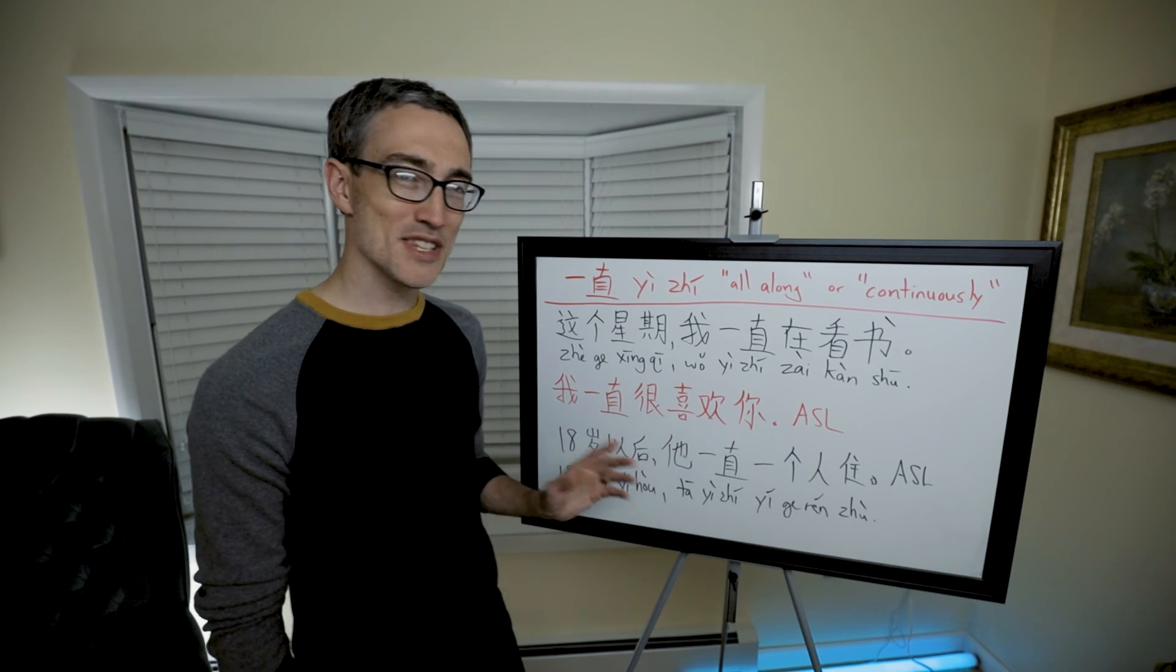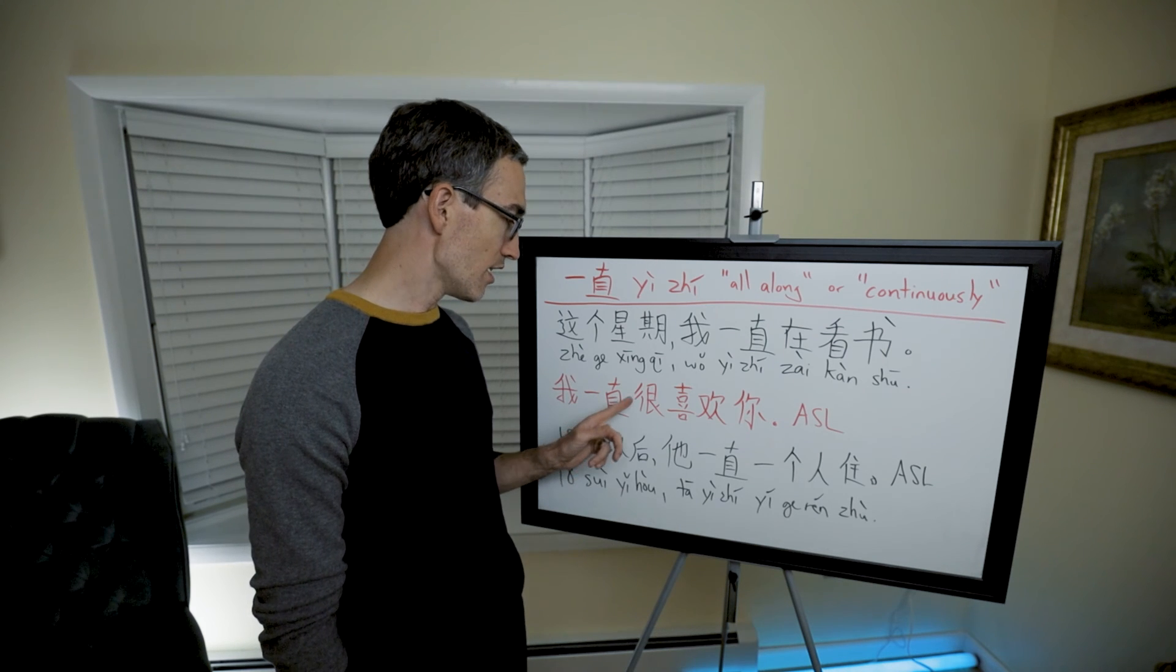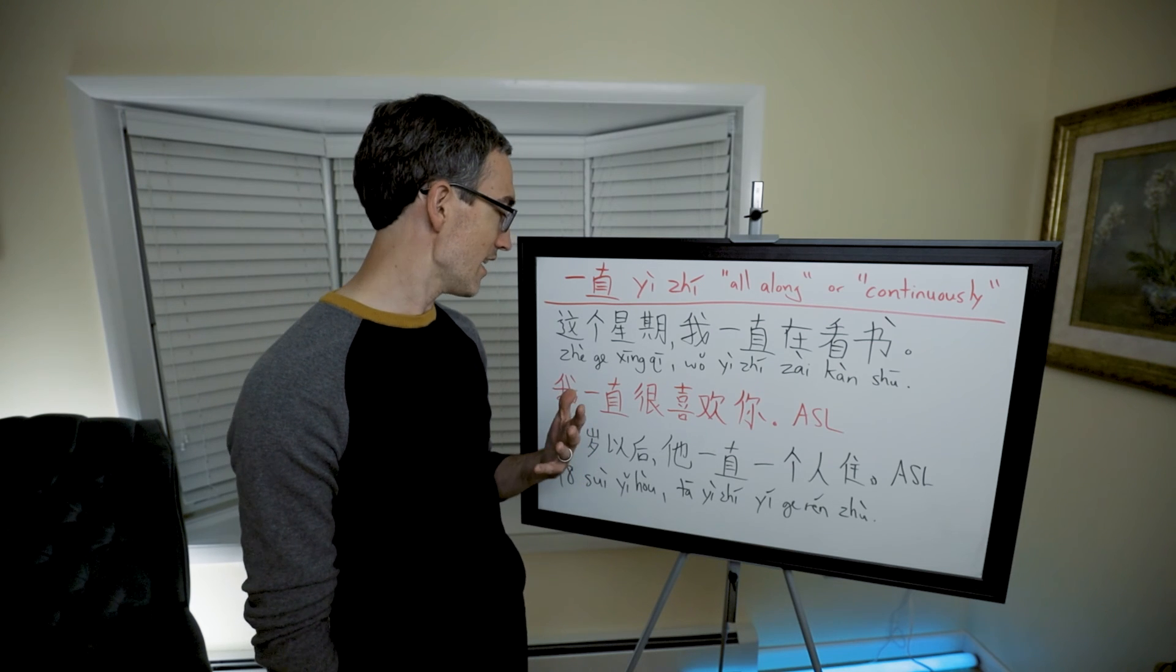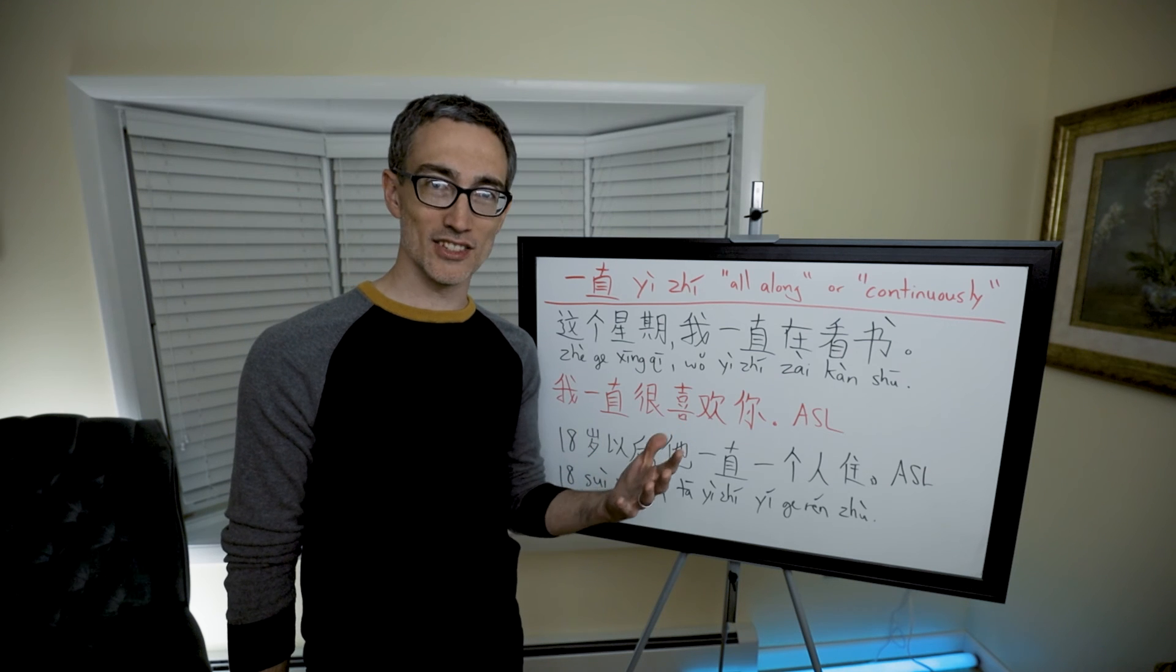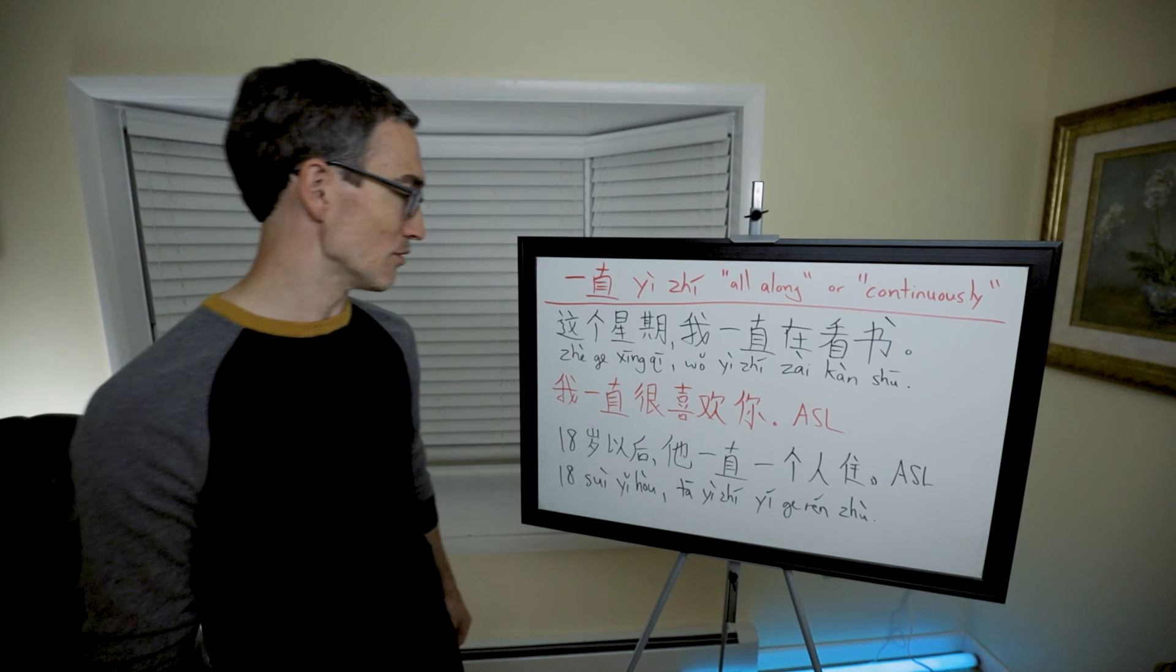我一直很喜欢你. So this is a little bit different. This is 我一直, I, all along, 很喜欢你. So what the point is that the person saying is, I have liked you for a long time. I have always liked you. Of course, always doesn't mean always. It just means for a substantial period of time.